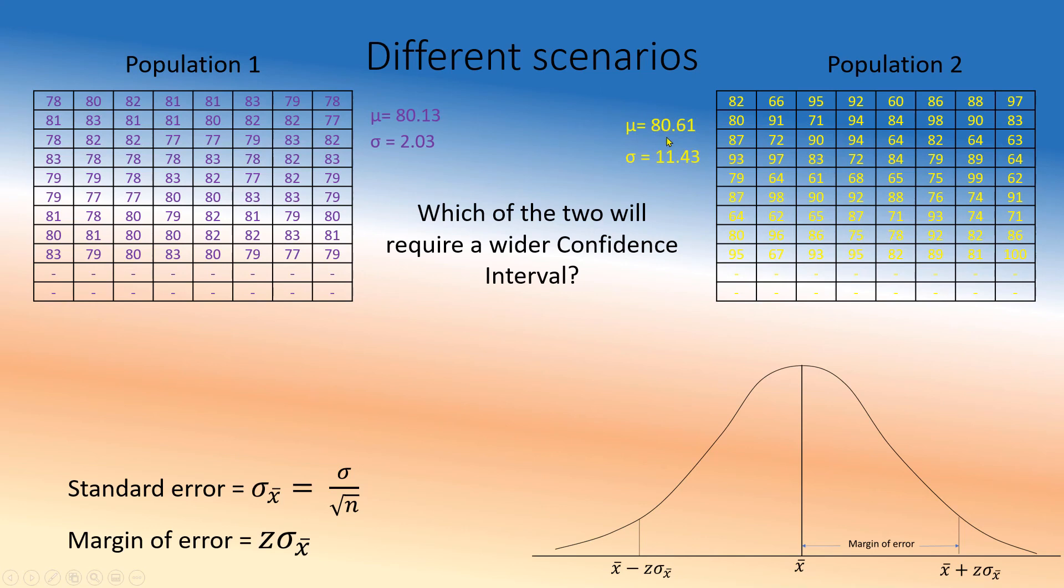In this case, mean is 80.61, pretty much same means, but sigma is 11.43, about five or six times more than this one. So which will give you a tighter interval? Obviously this one, because it doesn't matter what you get. You only get numbers from upper 70s to lower 80s. There's nothing else. In this case, you may get a sample mean of 73, you may get a sample mean of 83, depending on what sample size you choose. But here, you will not get that because they're very tightly packed.